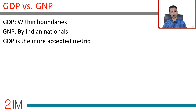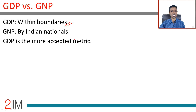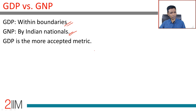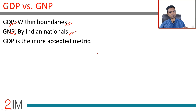Let's think about other terms. You hear about GDP and GNP. GDP is within boundaries — production within India. GNP is by Indian nationals — production by Indian nationals wherever they are. GNP is harder to compute, and for all practical purposes we talk about GDP; GNP is not used much.